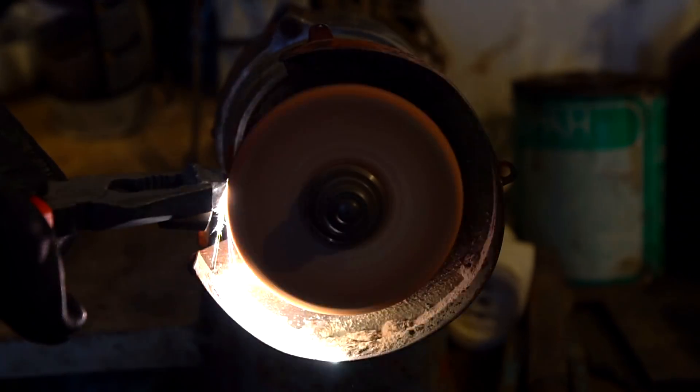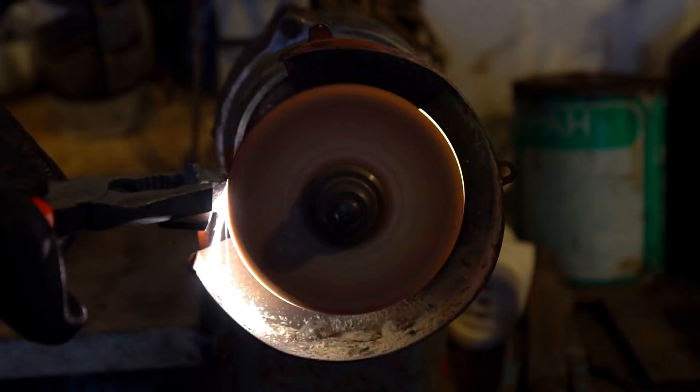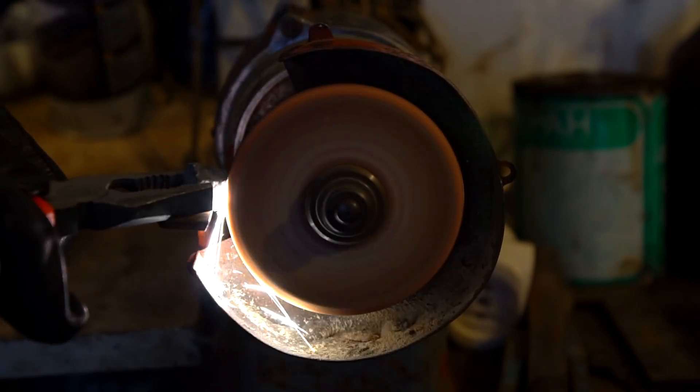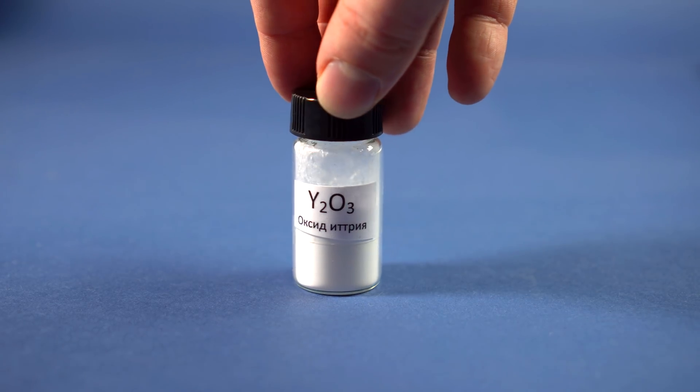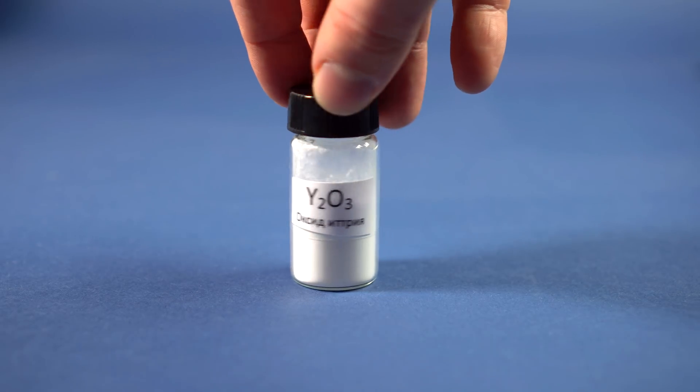Yttrium sparks are very bright. When heated up in air, this metal forms yttrium oxide, which along with europium is used in red luminophores in old television picture tubes.